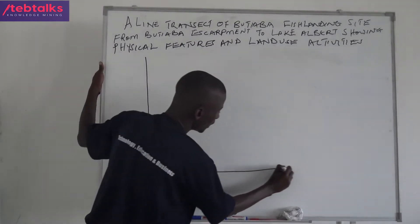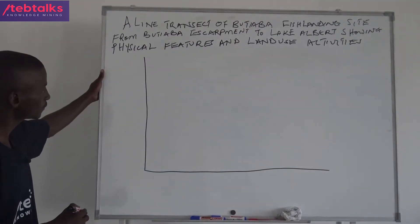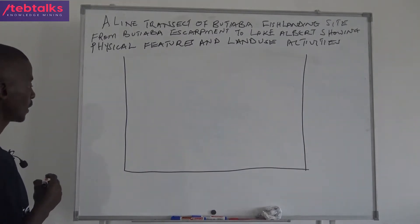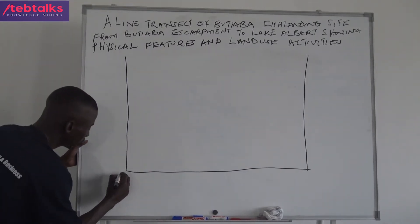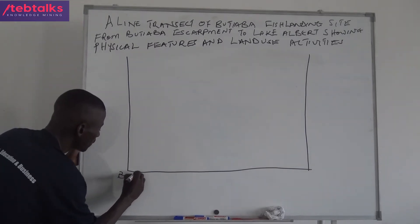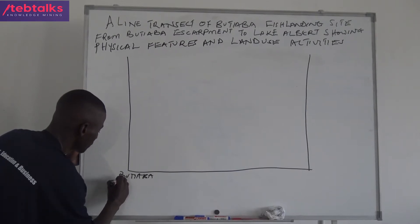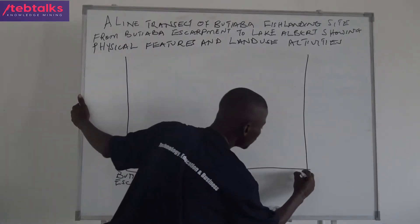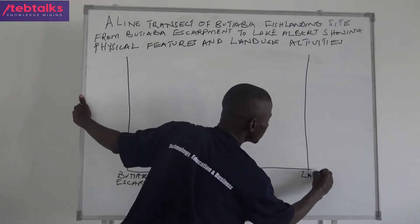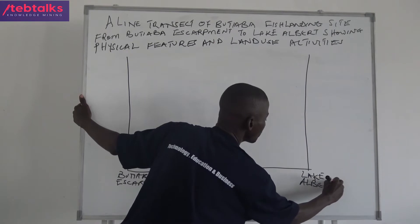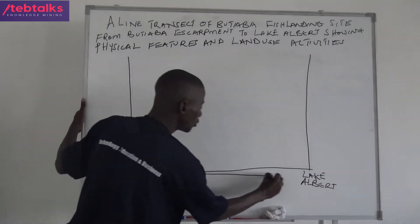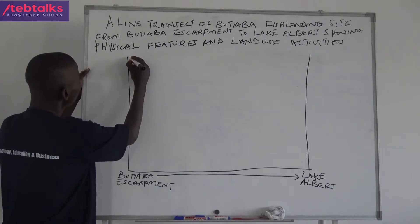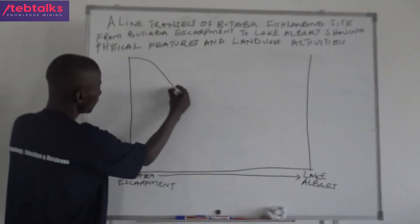So you draw the profile line like that. Starting from Butiaba Escarpment, going to Lake Albert. That should be shown from Butiaba Escarpment to Lake Albert. Then start drawing.